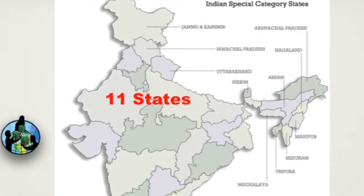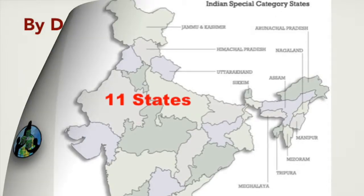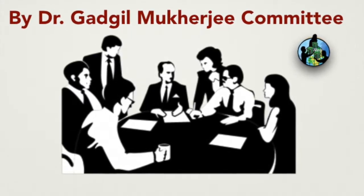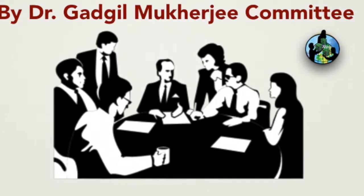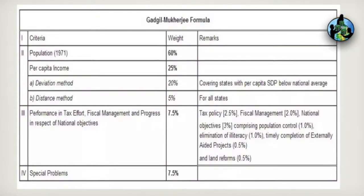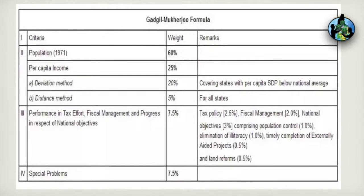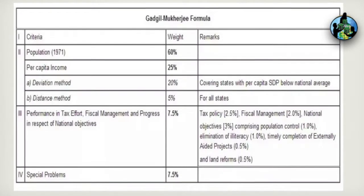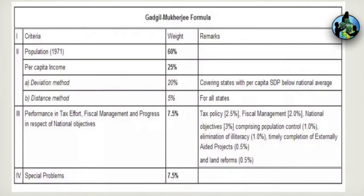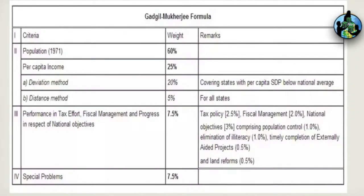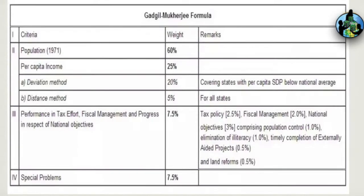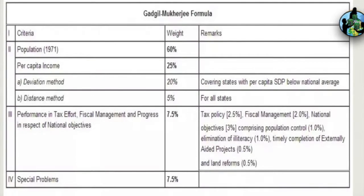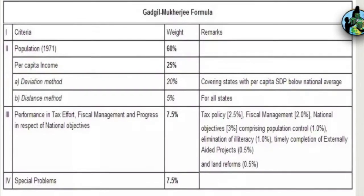Furthermore, for better justice to these special category states, the center had constituted a committee under the chairmanship of Dr. Gadgil Mukherjee. Based on his study and analysis, he prepared a formula which is known after his name as the Gadgil Mukherjee Formula. It was adopted in 1991, and since then the formula is being used as the basis for the distribution of tax revenue and grants to the respective states.